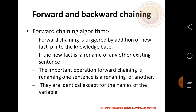The Forward Chaining algorithm is triggered by the addition of a new fact P into the knowledge base. If the new fact is a rename of another existing sentence, the impact operation renames one sentence as a rename of another, and there are ideal variable exports for renaming variables.